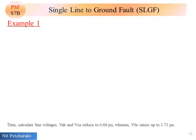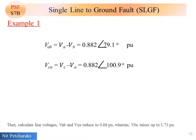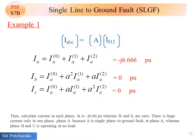Then calculate current in each phase. IA is minus J 6.66 per unit. Whereas IB and IC are zero. There is large current only in one phase, phase A, because it has single phase to ground fault at phase A. Whereas phase B and C is operating at no load.